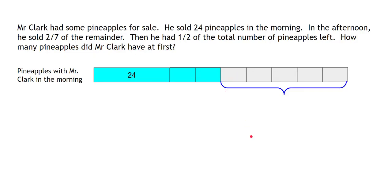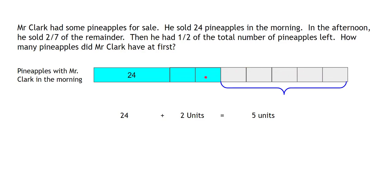So if half of the pineapples is five units, the other half should also be equal to five units. We can write it like this: 24 pineapples plus 2 units equals 5 units. Now if this is 2 units, and these units are the same size, this portion should logically be 3 units of the same size. So 3 units represents 24 pineapples.